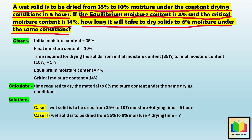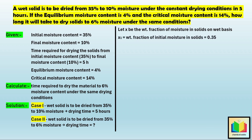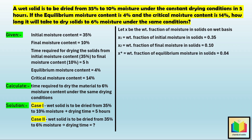We are given the moisture contents on a wet basis, which is defined as the weight fraction of moisture in the total weight of the wet solid. Let x be the weight fraction of moisture in the solids on a wet basis. Therefore, x1 is equal to the weight fraction of initial moisture in solids, which is equal to 0.35. x2 is equal to the weight fraction of final moisture in solids, which is equal to 0.10. x* is equal to the weight fraction of equilibrium moisture in solids, which is equal to 0.04. And xc is equal to the weight fraction of critical moisture in solids, which is equal to 0.14.